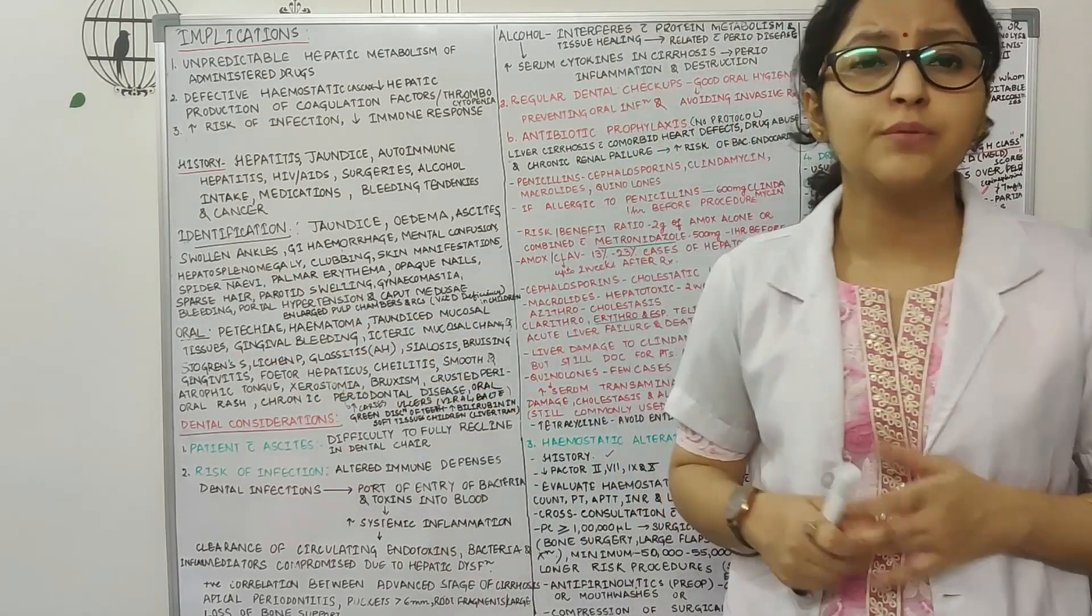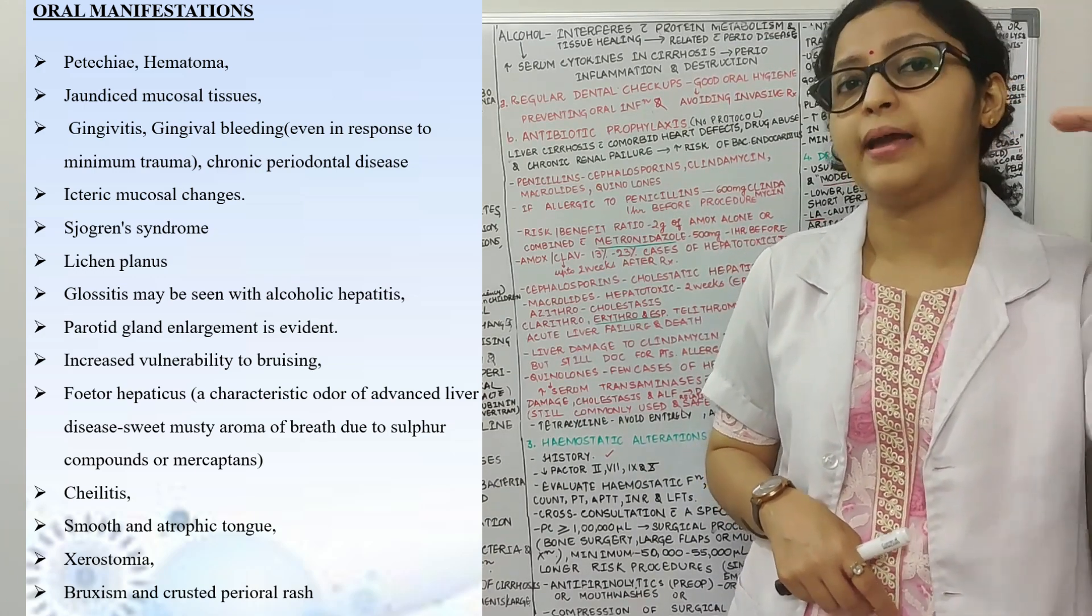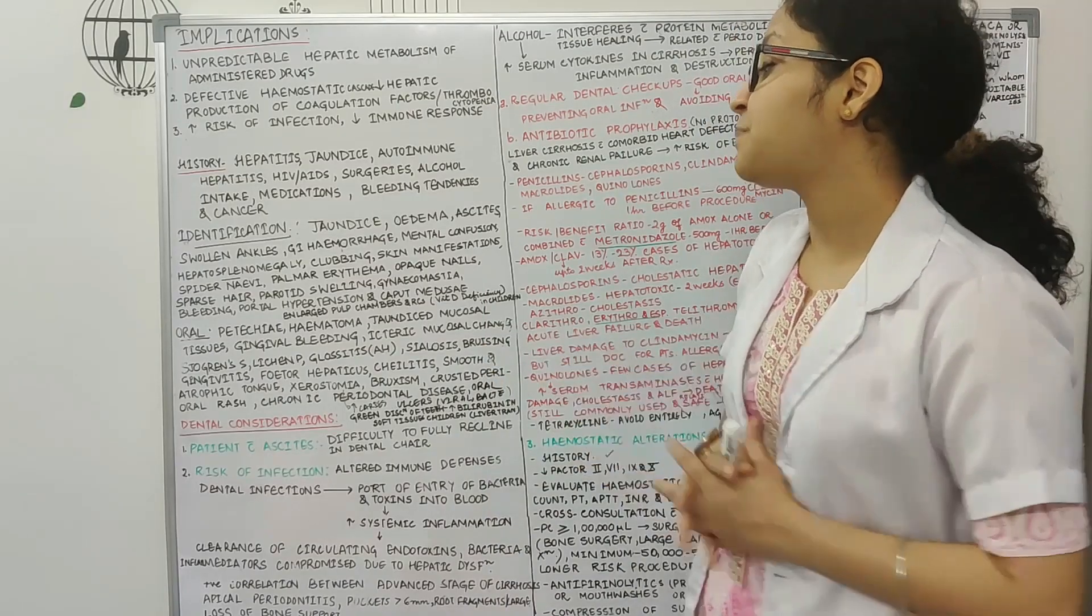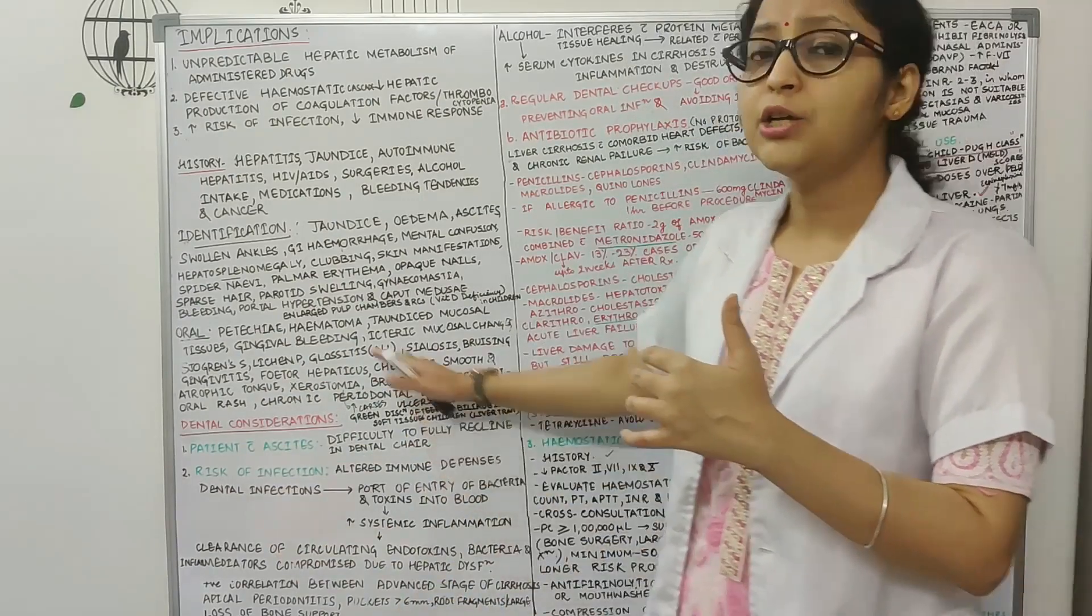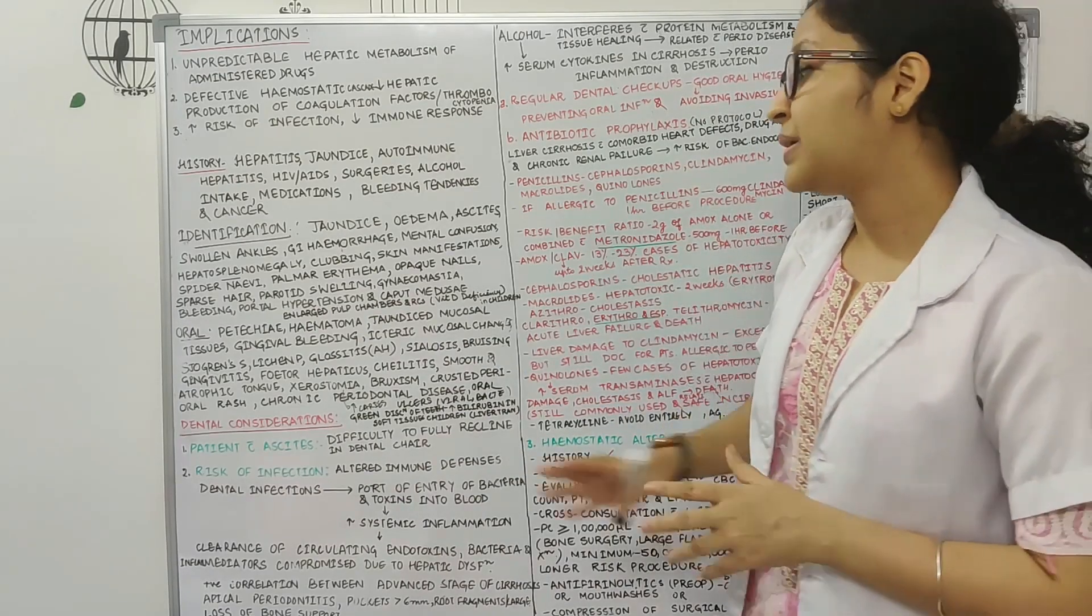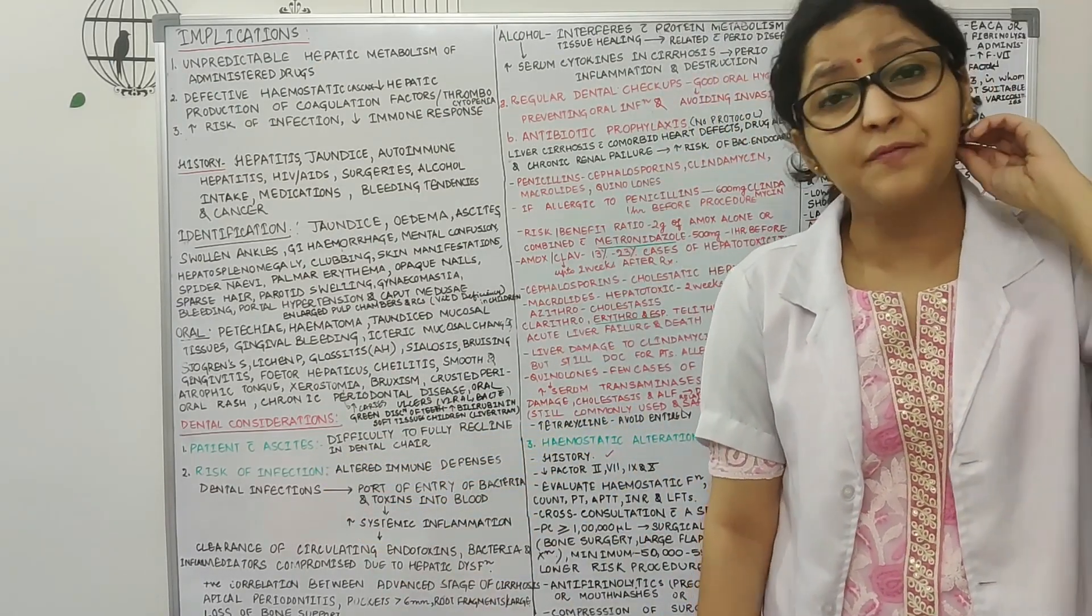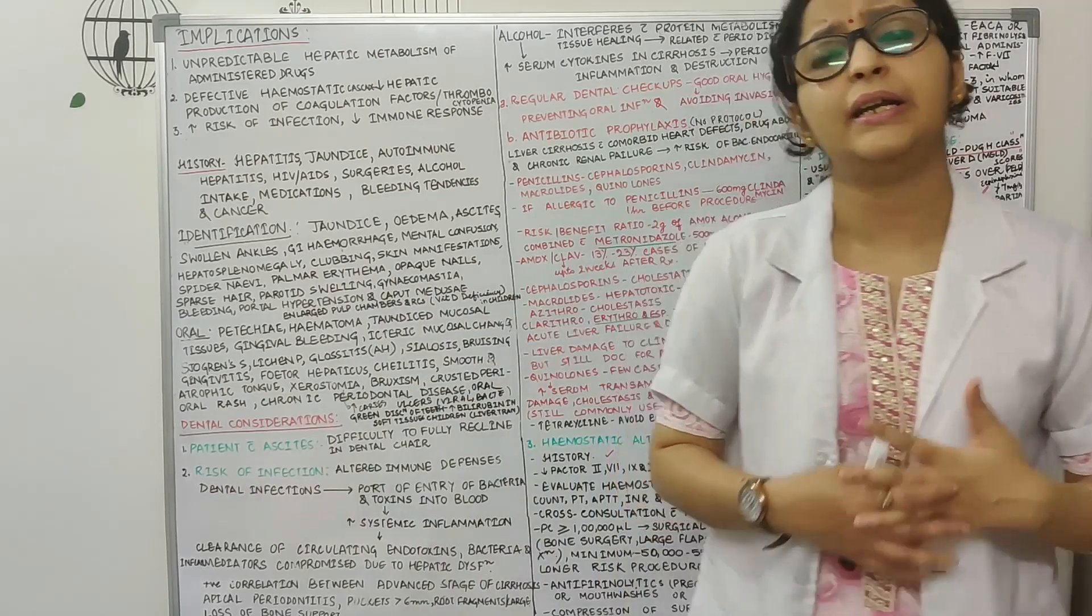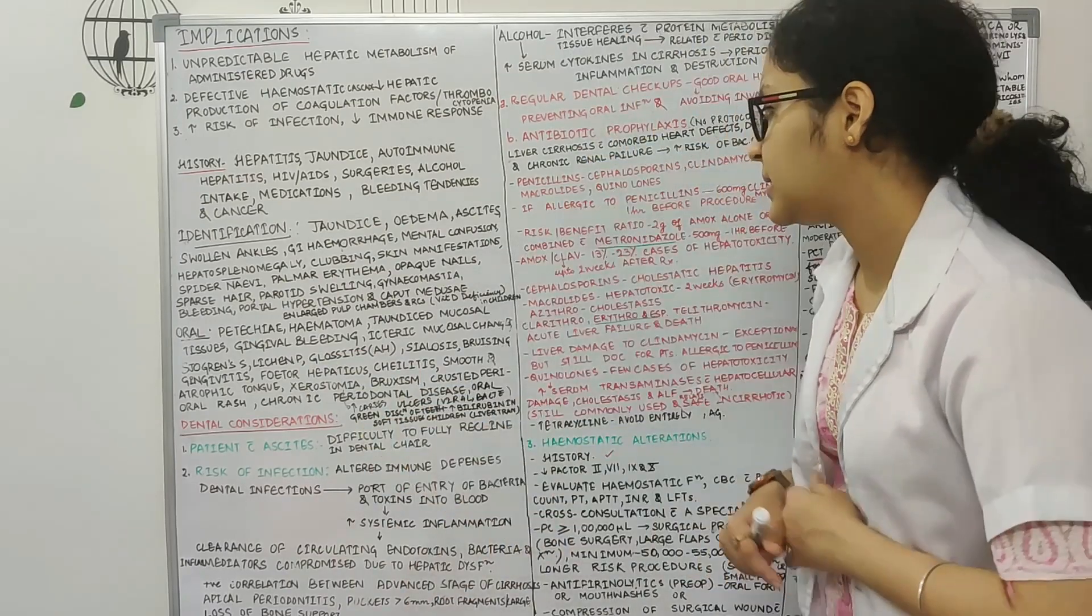Then oral manifestations are also very important. You can see petechiae, bruising in such patients. If the bilirubin count has been very high when the teeth were developed, you can see green discoloration of teeth in such patients. You can see large pulp chambers in such patients. Patients can present with xerostomia, dry mouth. Sjogren's syndrome symptoms. Then also the patient can present with lichen planus. Patient can present with candidiasis. So all these manifestations are basically not direct manifestations of a liver disease. But due to the medications, the patients are on a lot of medications like interferon therapy. Because of that we can see lichen planus or candidiasis in such patients.